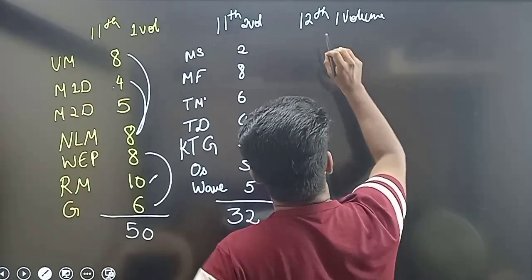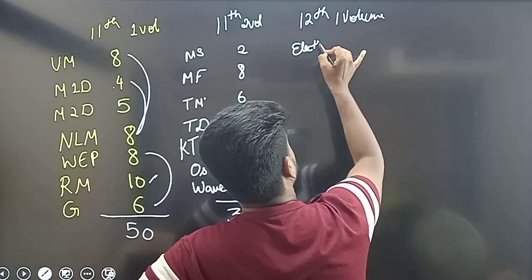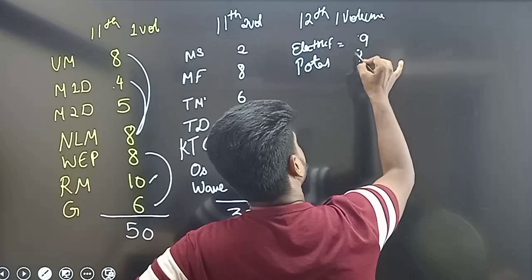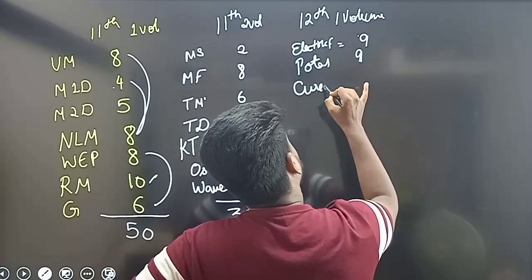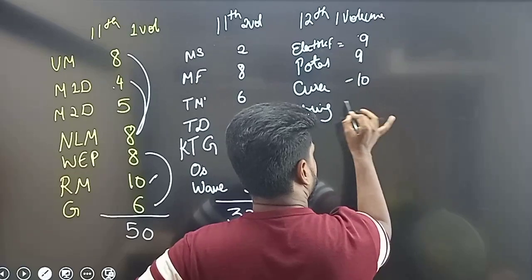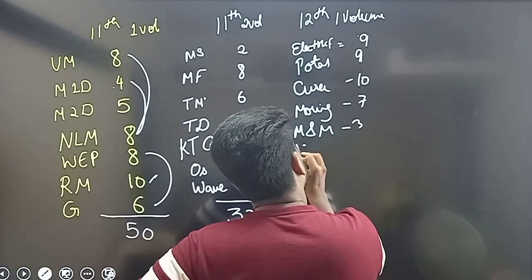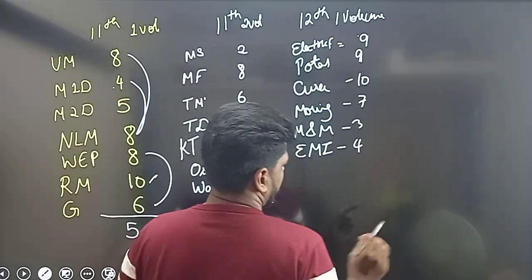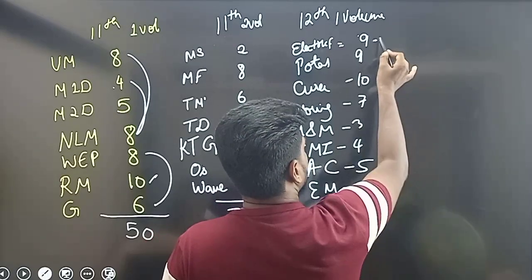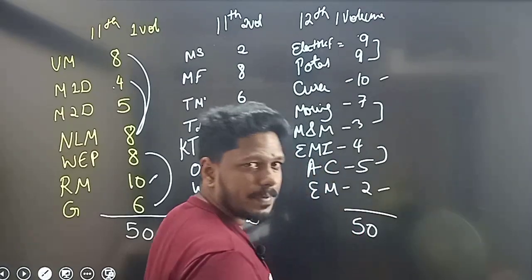12th grade, first volume: Electric charge and field — 9 to 10 lectures. Current electricity. Moving charge and magnetism: 7 lectures. Magnetism and matter: 3 lectures. Electromagnetic induction (EMI): 4 lectures. Alternating current: 4 to 5 lectures. EM waves: 2 lectures. Total approximately 50 lectures.